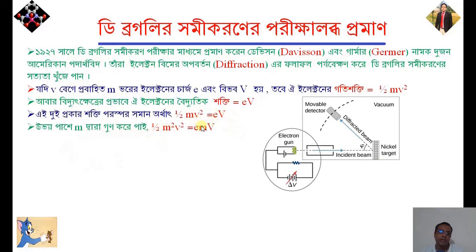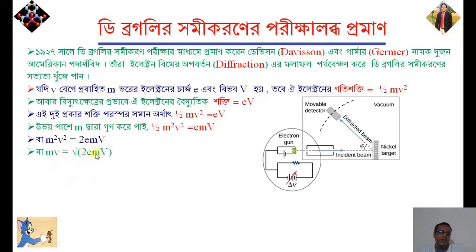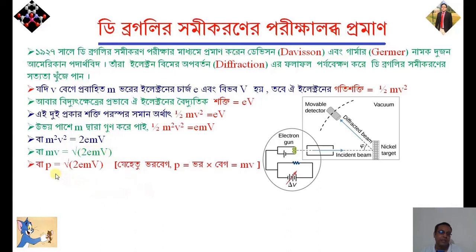m is equal to m, so m squared v squared is equal to 2emV. m squared v squared equals twice emV. mv equals root over 2emV. t equal to root over 2emV.